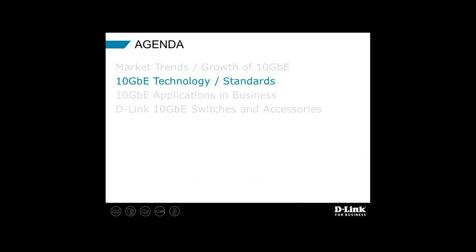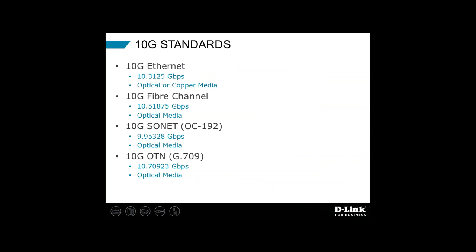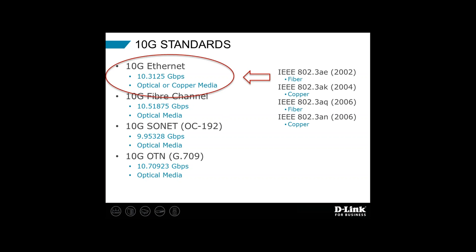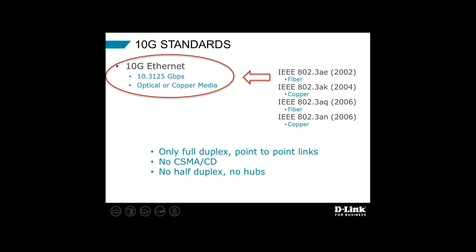Now let's shift gears and talk a little bit about 10 gig technology and review the IEEE standards. I want to start by acknowledging several different 10 gig protocols — 10 gig Ethernet, 10 gig fiber channel, 10 gig SONET (also called OC-192), which is widely used in the telecommunications service provider industry, and OTN (ITU G.709). What I want to point out is that today we're talking about Ethernet only — not fiber channel, SONET, or OTN. The IEEE standards that define 10 gig Ethernet are shown on the right side of the slide, covering 10 gig Ethernet over fiber and over copper.